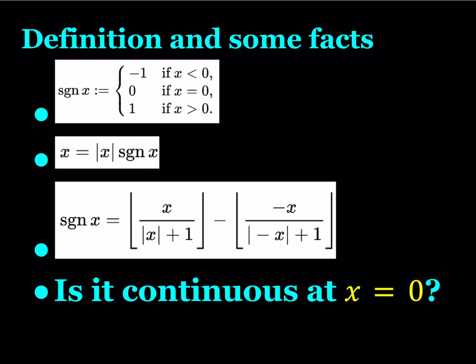The signum function can be defined as a piecewise function, and it is known as something that turns a value to a number indicating its sign. If x is positive, it turns it into 1. If x is negative, it turns into negative 1. So it just looks at the sign of the expression. And of course, if it's 0, then it just keeps it at 0. So it's sort of like an absolute value, but slightly different.